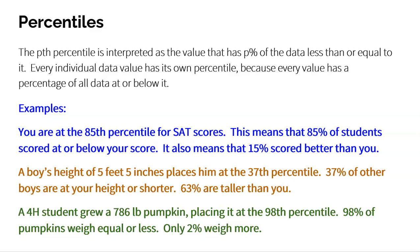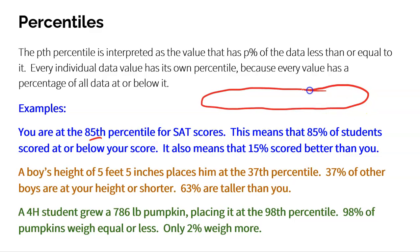So for example, maybe you take the SAT and you are told in your score report that you are at the 85th percentile. That means that 85% of students scored at or below your score, and 15% scored better than you. Your percentile tells you where you are — it tells you your position in the data. If you think of all of the SAT scores from the entire United States and you fall at the 85th percentile, 85% of kids are at or below your score and 15% are above you.